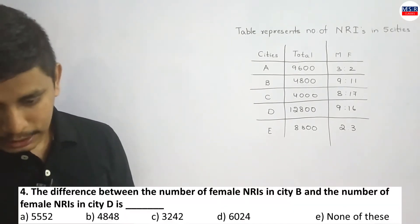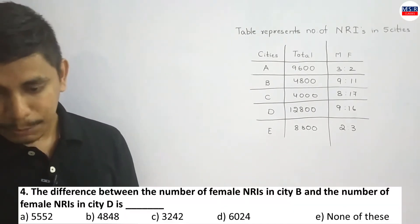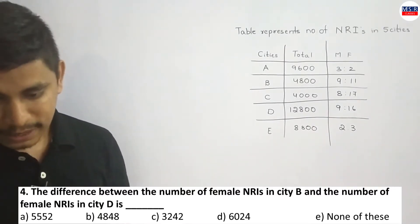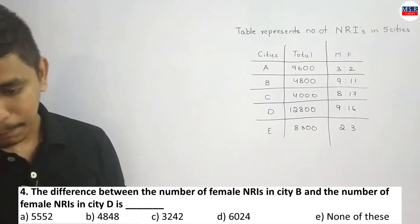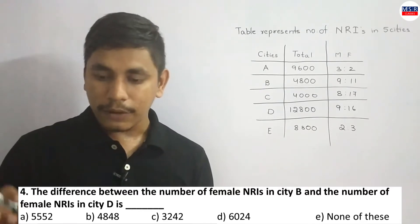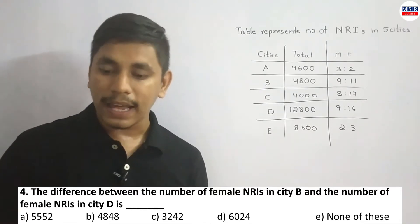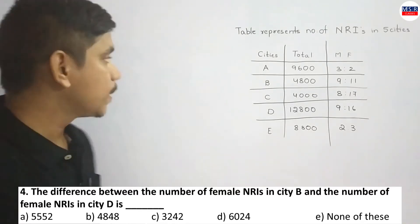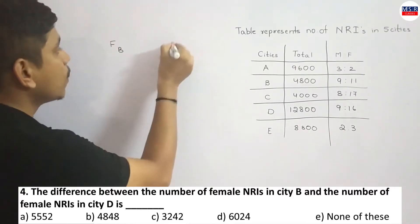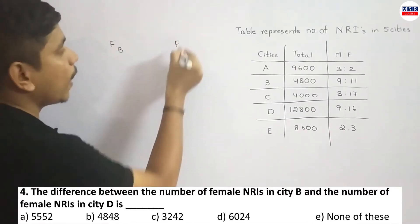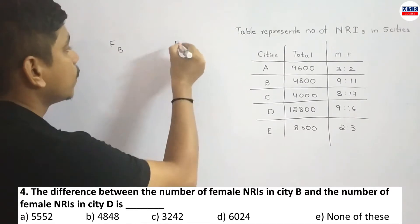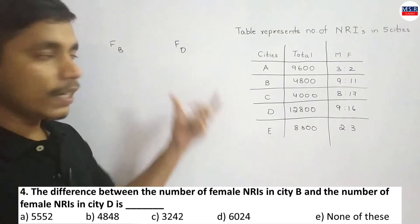Fourth question: Find the difference between the number of female NRIs in city B and the number of female NRIs in city D. Female NRIs from city B and female NRIs from city D — we need the difference.